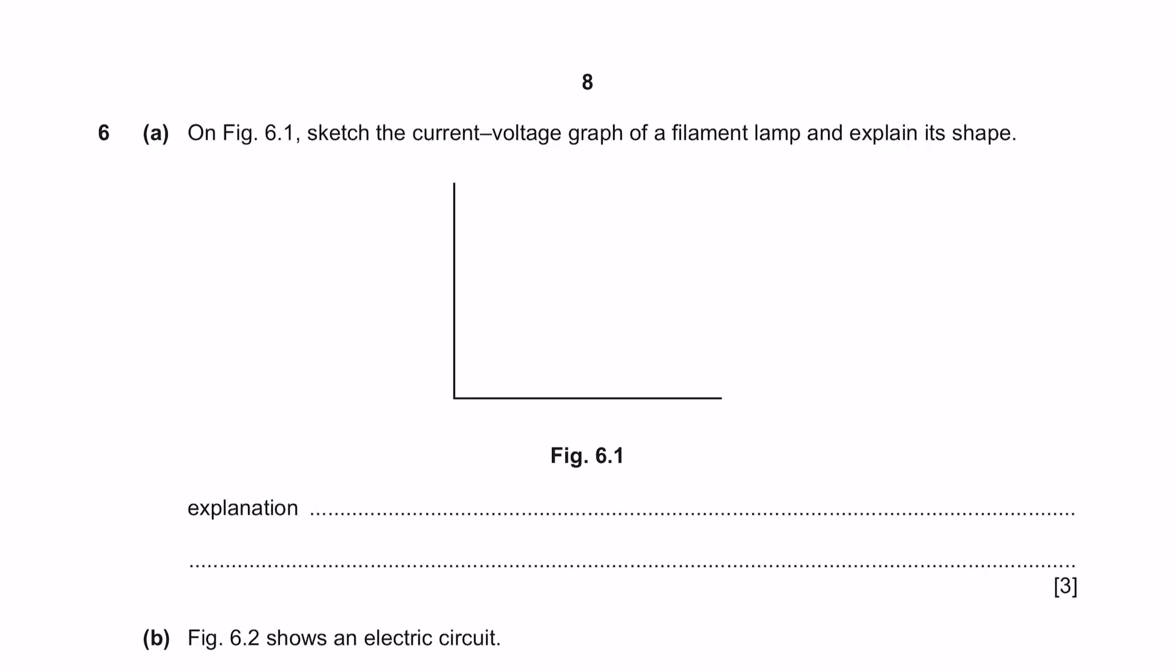Question 6 part A. On figure 6.1, sketch the current voltage graph of a filament lamp and explain its shape. Pay attention here that we are specifically asked to draw for a filament lamp. According to Ohm's law, voltage equals current times resistance. The resistance is the gradient of the graph and voltage is directly proportional to its current.